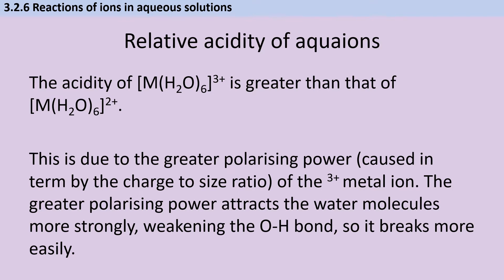The specification includes examples of 3+ and 2+ complex ions because the 3+ ions — aluminium and iron(III) — have greater acidity than the 2+ ions like copper and iron(II). This is because of their greater charge-to-size ratio, giving them greater polarising power. They attract water molecules more strongly, weakening the O–H bond so it breaks more easily, releasing free hydrogen ions responsible for acidity.